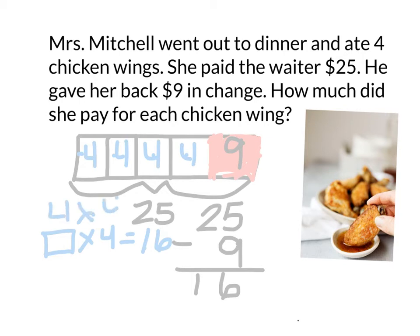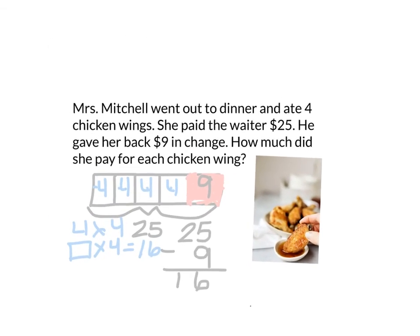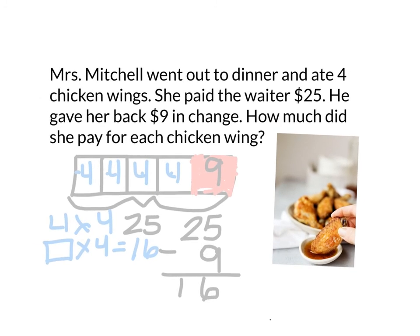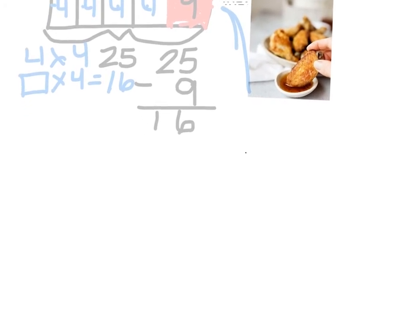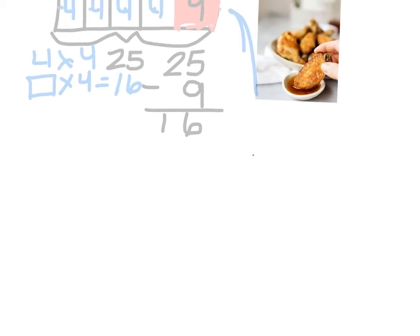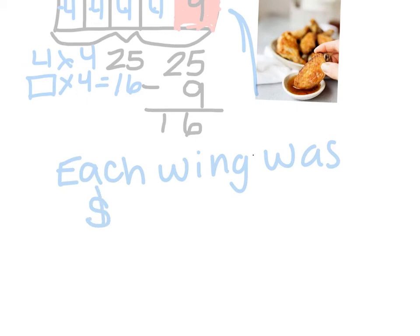Mrs. Sexton, how much did each wing cost? Four dollars! Four dollars, and she got nine dollars back in change. I would write a complete sentence for my answer: each wing was $4 — and again, these are gourmet wings, boys and girls. What do you think Mrs. Sexton? Sound good? I think we're all done. Yeah, thanks for walking me through that Miss Huddle. The bar model really helped me to see it. You are most welcome.